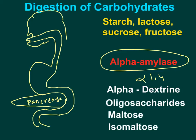Starch is broken down in the mouth if we give sufficient time by chewing 20 to 40 times. Salivary alpha amylase randomly breaks the alpha 1,4 bonds and converts starch to alpha dextrin, which is a simplified form of starch. Lactose, sucrose, and fructose are not acted upon in the mouth — they simply pass down into the stomach.